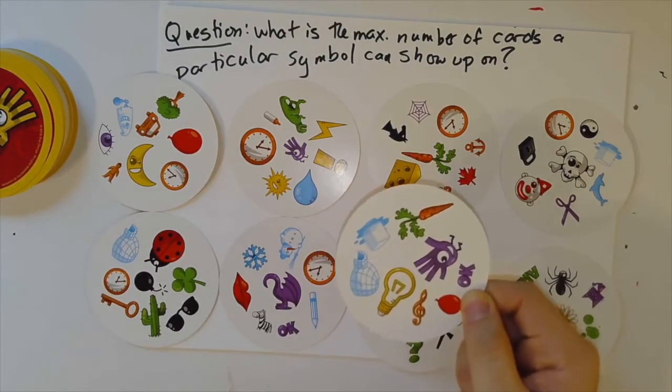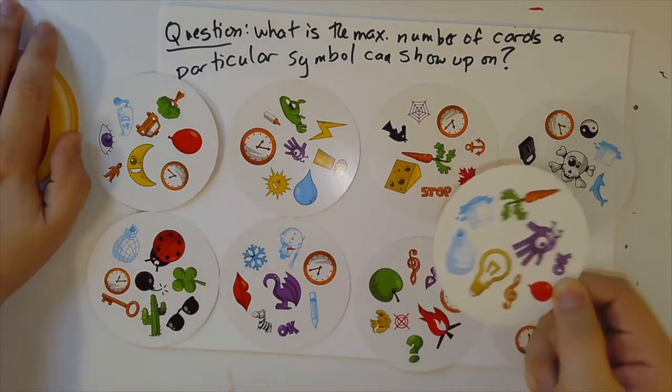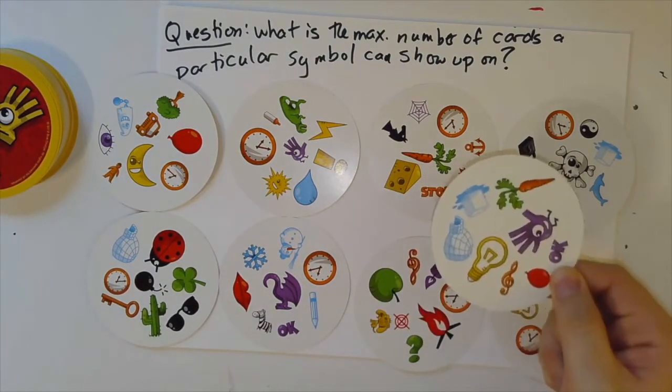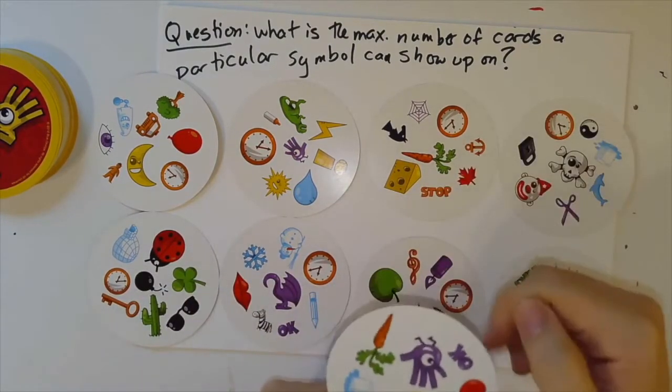Because remember, by assumption, there is a card in our deck that does not have a clock on it. Because remember, our third condition, the mystery condition that you might miss, is that no symbol appears on every card.